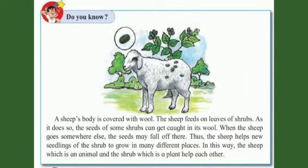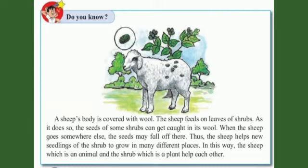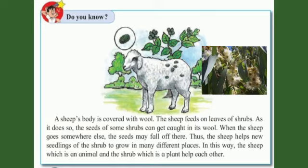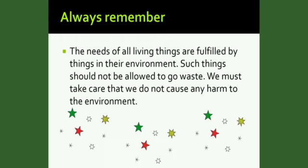Do you know? A sheep's body is covered with wool. The sheep feeds on leaves of shrubs, and as it does so, the seeds of some shrubs can get caught in its wool. When the sheep goes somewhere else, the seeds may fall off there. Thus, the sheep helps new seedlings of the shrub to grow in many different places. In this way, the sheep — which is an animal — and the shrub — which is a plant — help each other.